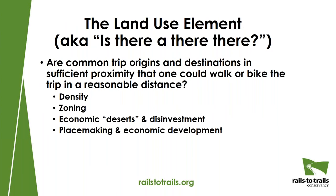The land use element is really the question of, is there a there there? Are the common trip origins and destinations close enough together in proximity that a person could walk or could bike in a reasonable distance? Or have we built our community in a way that multimodalism is not really an option? There are development patterns that essentially mandate using a motor vehicle — that's a function of density, often a function of zoning, separating uses. In some places, there are economic deserts or disinvestment where there aren't enough destinations for trips to be possible.